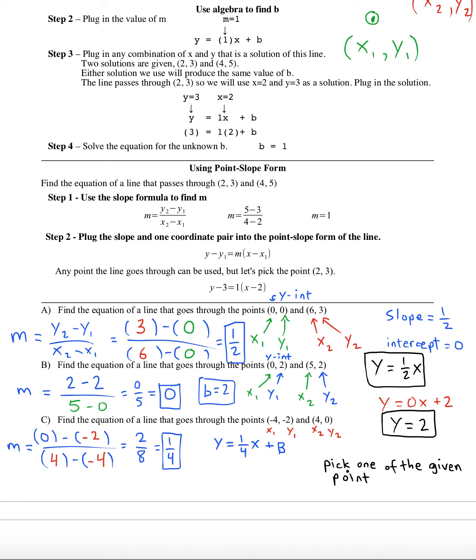Whichever one you want, it'll work out either way. I'm gonna pick four comma zero. Remember that is an x and a y. That's a solution to this line. In the past we used the equation of the line to find the solution. Here we're gonna use the solution to find the equation.